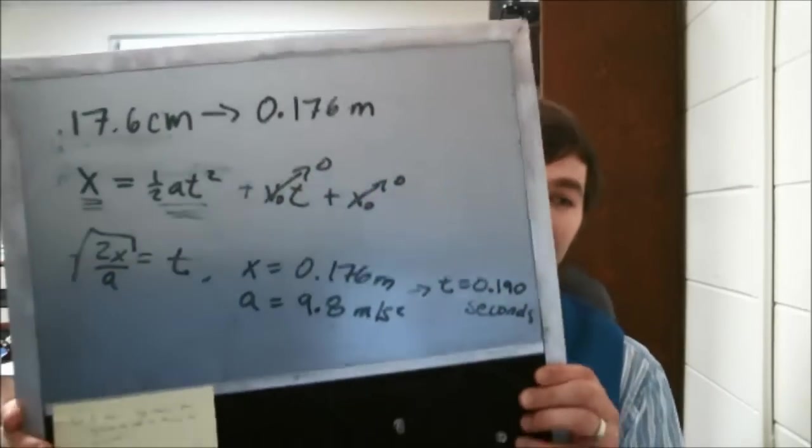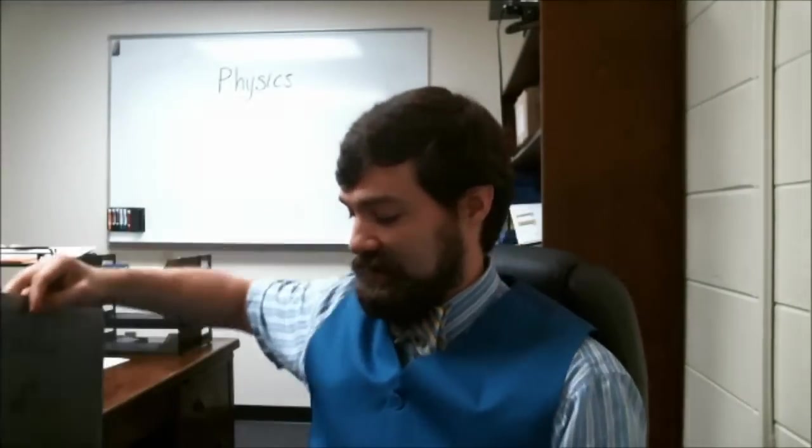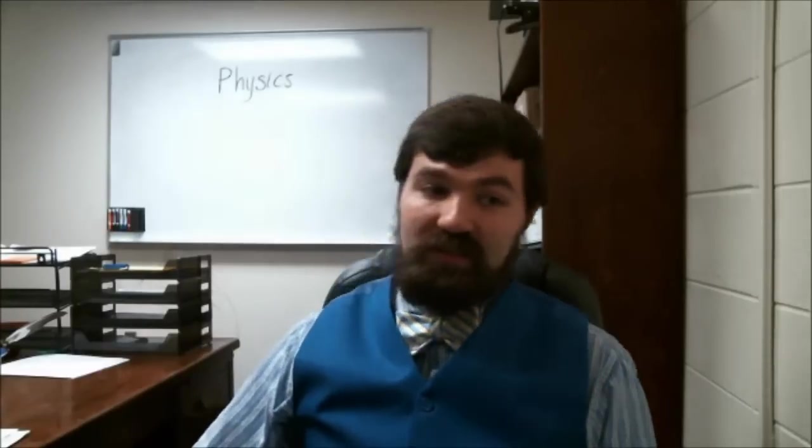And then once you've repeated this 10 times, you're actually going to take an average. And the order of operations here is kind of important. There's two ways that you can do this average. One way would be to measure the distance each time, then take the average of the distances, and then convert that to a time using the equation that I've put here on this board. The other way is to convert each distance into a time and then find the average of those times after. And it turns out that you should do it that second way: convert distance to time, then find the average of the times.